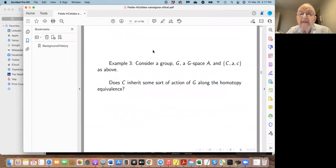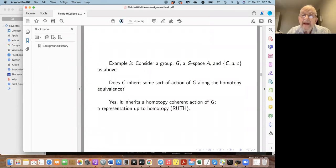Another example: consider a group G, a space on which G acts as representations via homomorphisms, and we have a corresponding C with the maps a and c. Is C some sort of G-space? Using the homotopy equivalence, yes, it inherits a homotopy coherent action of G, which we'll say precisely what that means. It's also known as a representation up to homotopy of G on C.